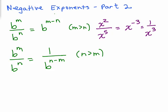We usually only write this one, b to the m over b to the n equals b to the m minus n, but it's important to note that you would get the right answer doing the second way I've shown you.